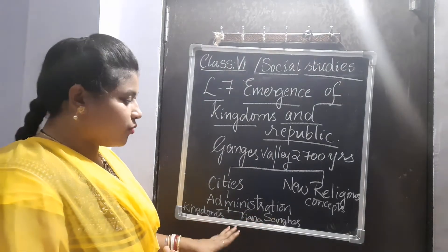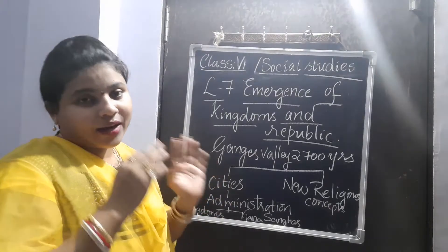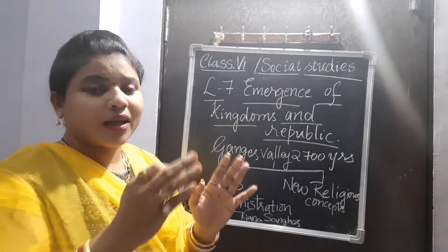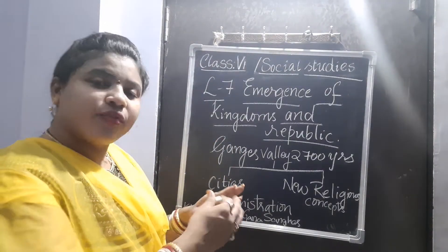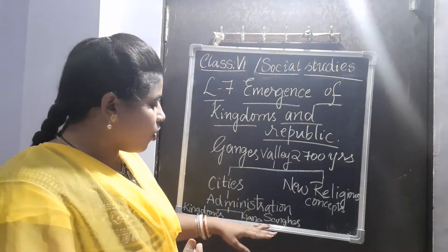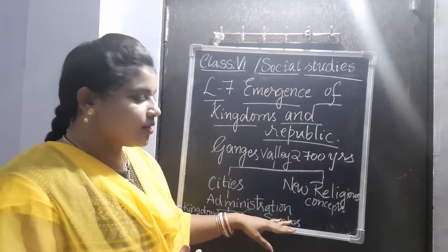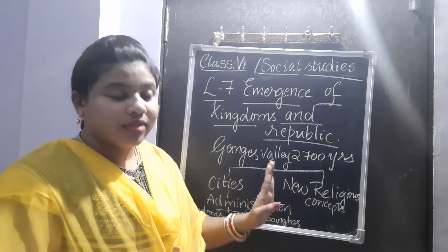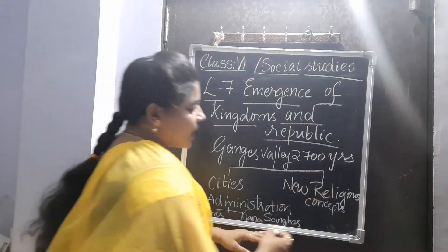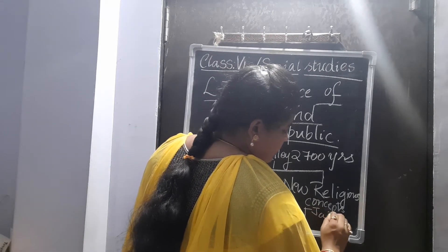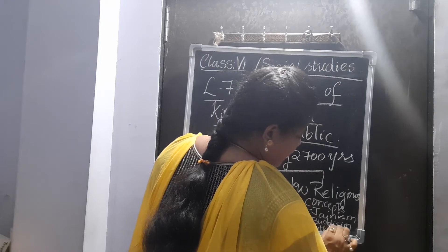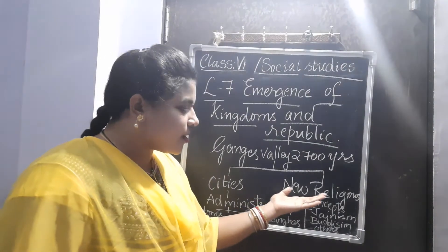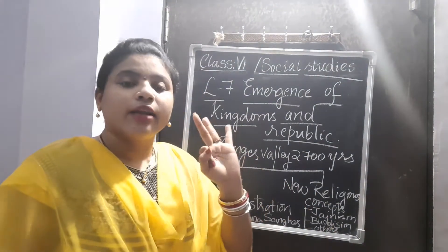This administration is found in two places: one is in kingdoms, and the other is in Gana Sanghas. Just as every school has its own administration, different kingdoms in the Ganges Valley had different administrations. When we talk about new religions from about 2700 years ago, the new religions that emerged were Jainism, Buddhism, and some other religions.